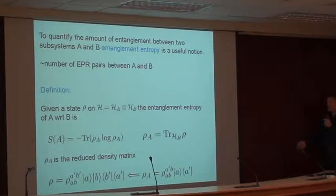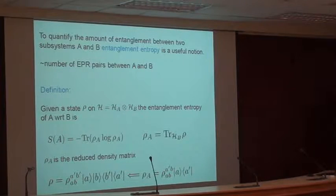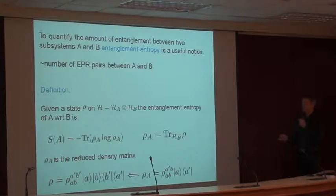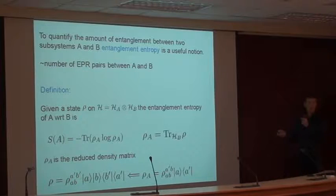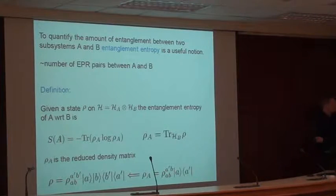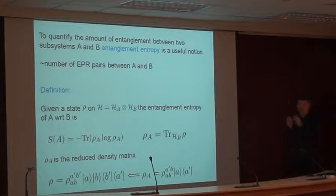You can see that the two indices in the B system are equal when tracing out. This reduced density matrix is useful because if I have a state on a combined A and B system and I'm only interested in doing measurements in subsystem A, then all the outcomes of those measurements can be reproduced by the reduced density matrix rho_A. So as long as I restrict measurements to subsystem A, the reduced density matrix captures all the relevant information.